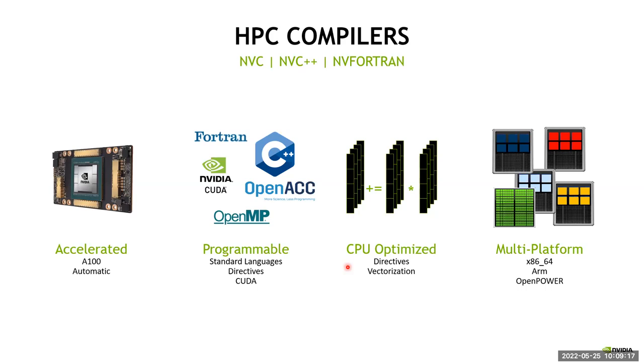So the first thing we need in order to enable you to take advantage of these features in the standard languages is great compilers. And so we have our HPC compilers that are available as part of a larger package for C, C++ and Fortran. These compilers are of course able to work on our accelerated platforms, including automatic acceleration to the latest GPUs.